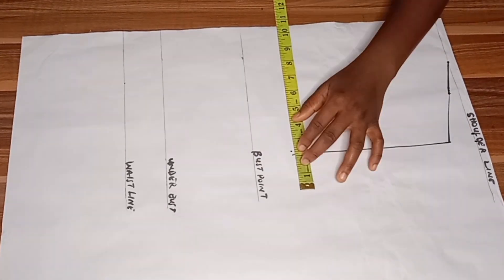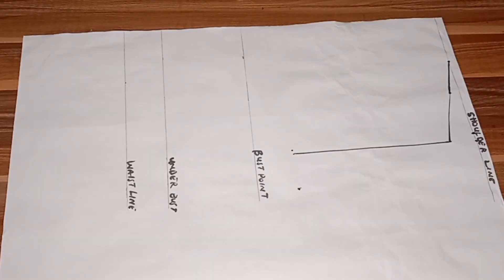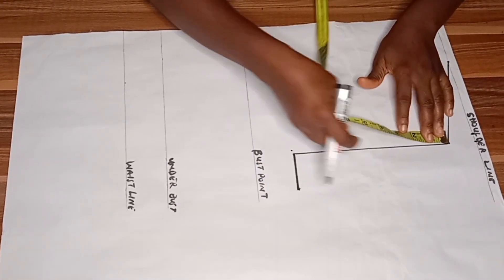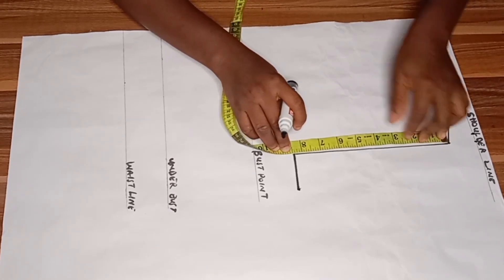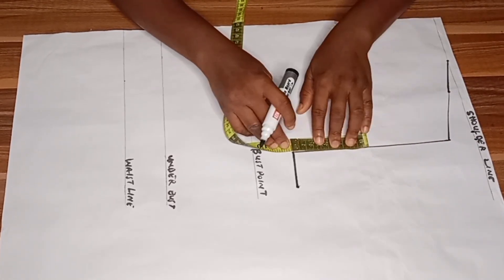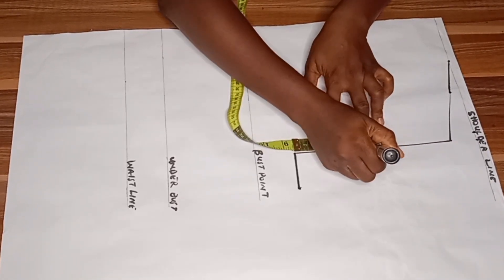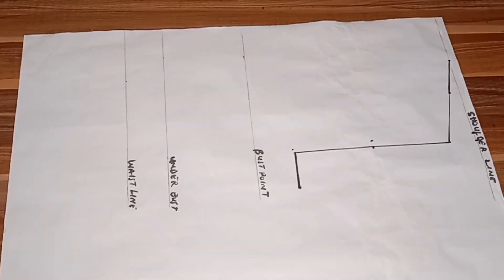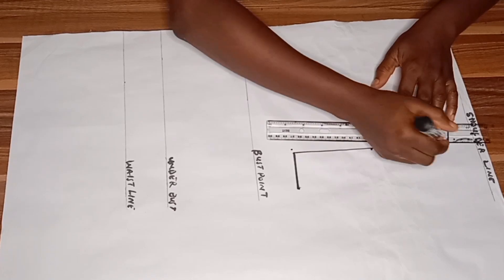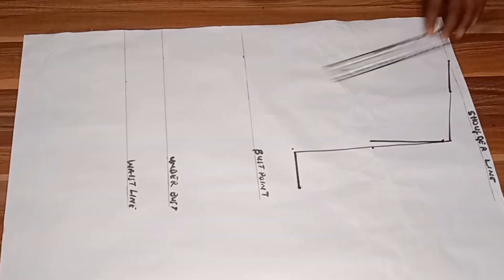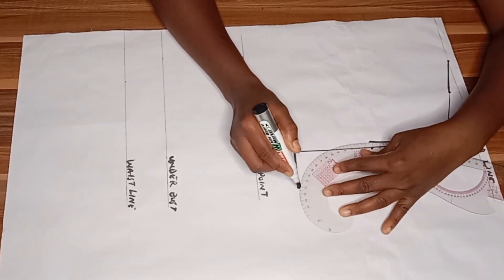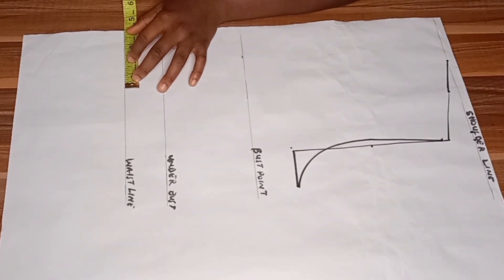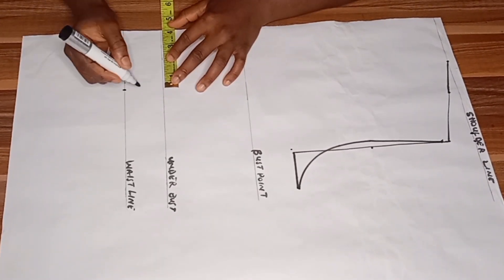I'll rule it into the shoulder slope. For the armhole curve, the first thing I'll do is divide my bust by four and connect it into the armhole length. Then I'll divide my armhole length into two to get the midpoint. From that midpoint I'll come in by half an inch. Using my straight ruler I'll connect it to the shoulder slope, and using my curve ruler I'll connect it into the point where I divided my bust. Now we have our armhole curve.